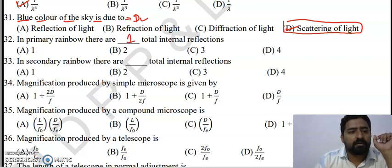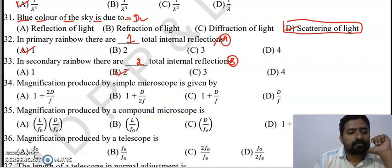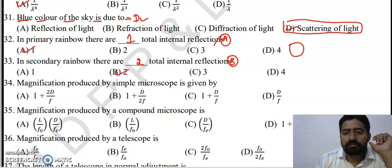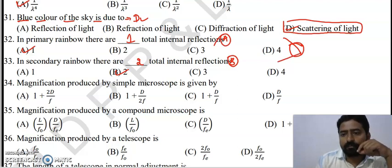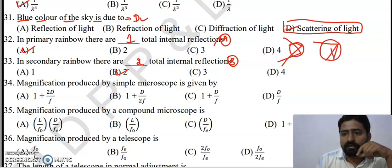For a primary rainbow, there is one total internal reflection (TIR), so option A is primarily one. For a secondary rainbow, there are two TIRs — light is incident, then reflected twice — making it secondary. Option B is two.